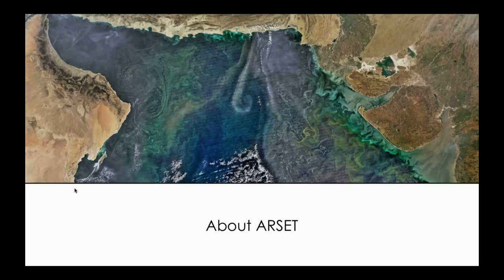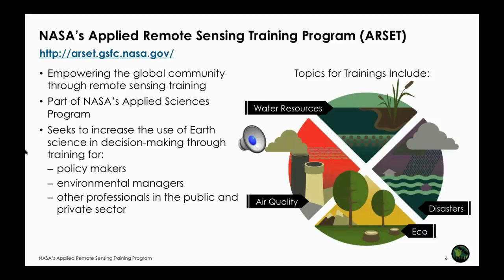Here is an outline for today. For those not familiar with ARSET, we will start with an introduction to the Applied Remote Sensing Training program, then talk about remote sensing of water quality, and then monitoring water quality in coastal and inland waters. NASA's Applied Remote Sensing Training program is set up to empower the global community through NASA remote sensing training. It's part of NASA's Applied Sciences program, designed for policymakers, environmental managers, and other professionals.